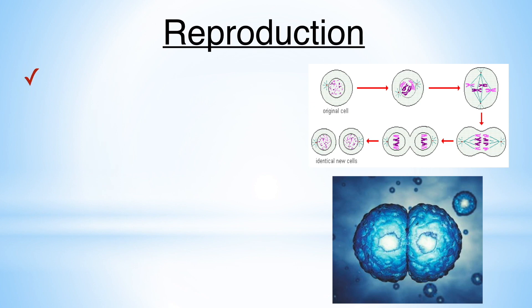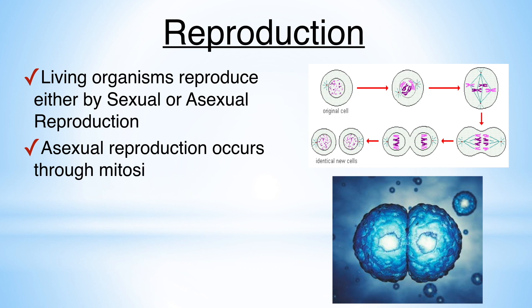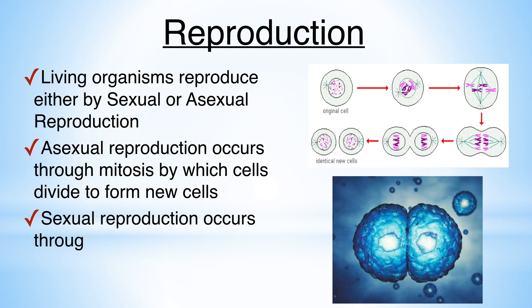Reproduction. Living organisms reproduce either by sexual or asexual reproduction method. Asexual reproduction occurs through mitosis by which cells divide to form new cells. Sexual reproduction occurs through meiosis that takes place in gametes.